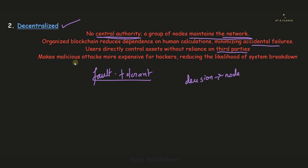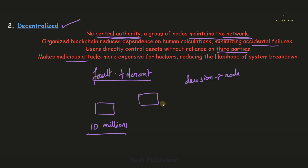The organized blockchain reduces dependence on human calculation, minimizing accidental failures, making it fault tolerant. Users will directly control assets without reliance on a third party. This decentralized nature makes malicious attacks more expensive for hackers, reducing the likelihood of system breakdown. For example, if there are 10 million nodes in the blockchain network and a hacker wants to make a small change in the ledger of person A, that change won't be reflected across all 10 million ledgers automatically — the hacker would have to change all 10 million ledgers.